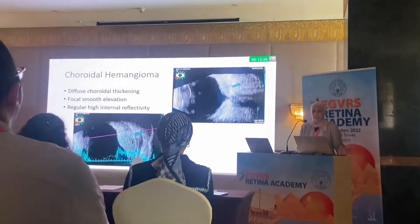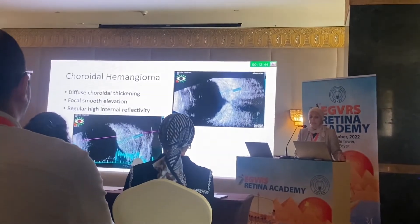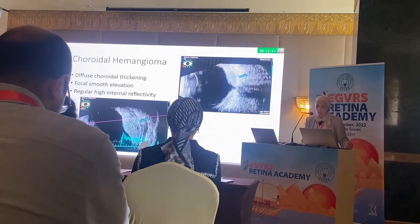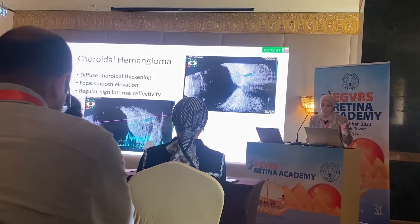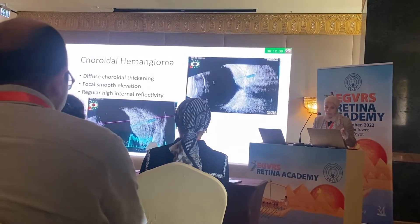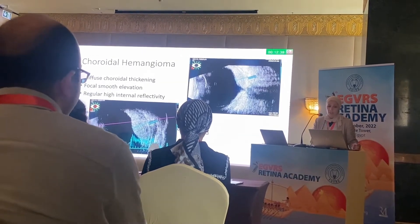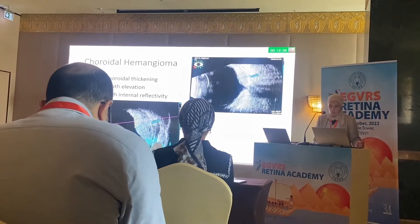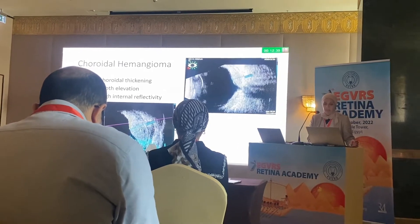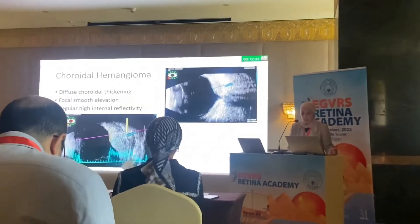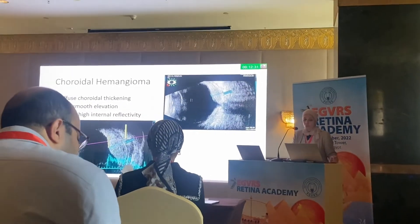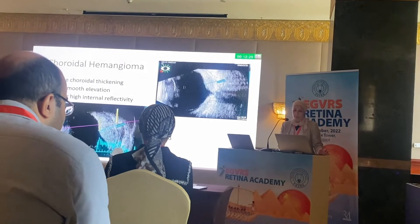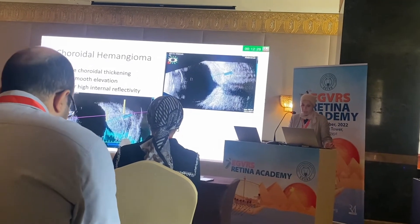Choroidal hemangioma appears as diffuse choroidal thickening, with some presenting as focal smooth elevation. On this smooth elevation we can identify the surface tumor spike, the base tumor spike, and the internal reflectivity always shows regular high internal reflectivity.